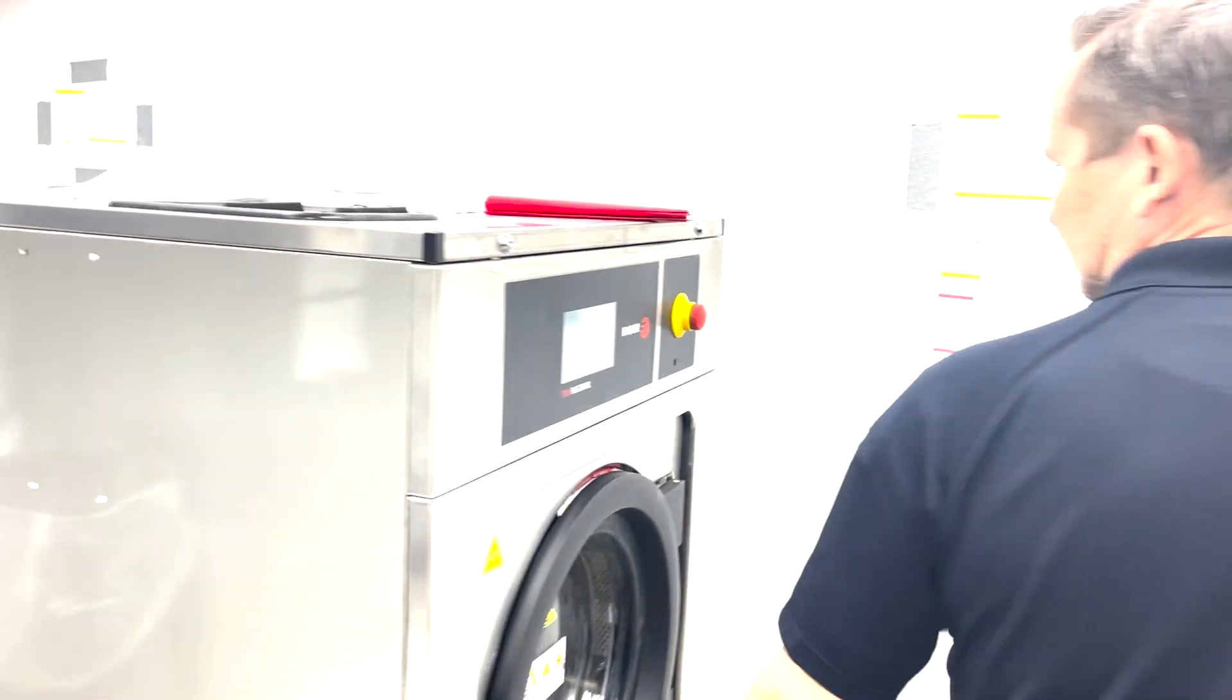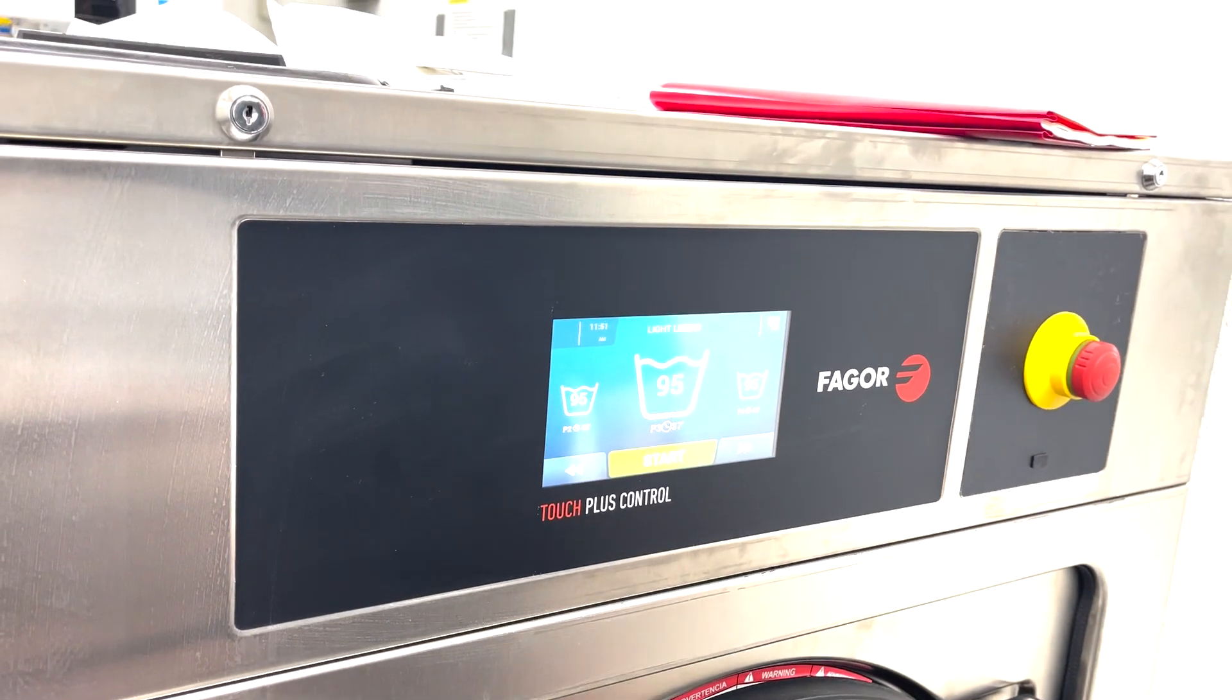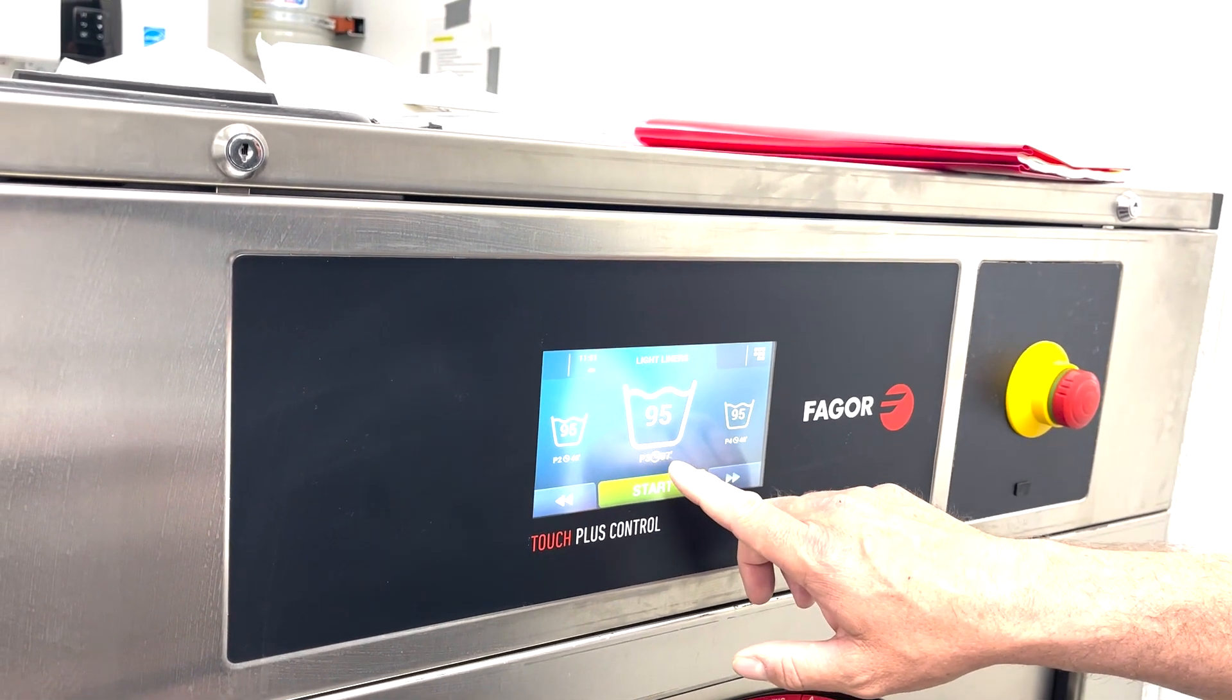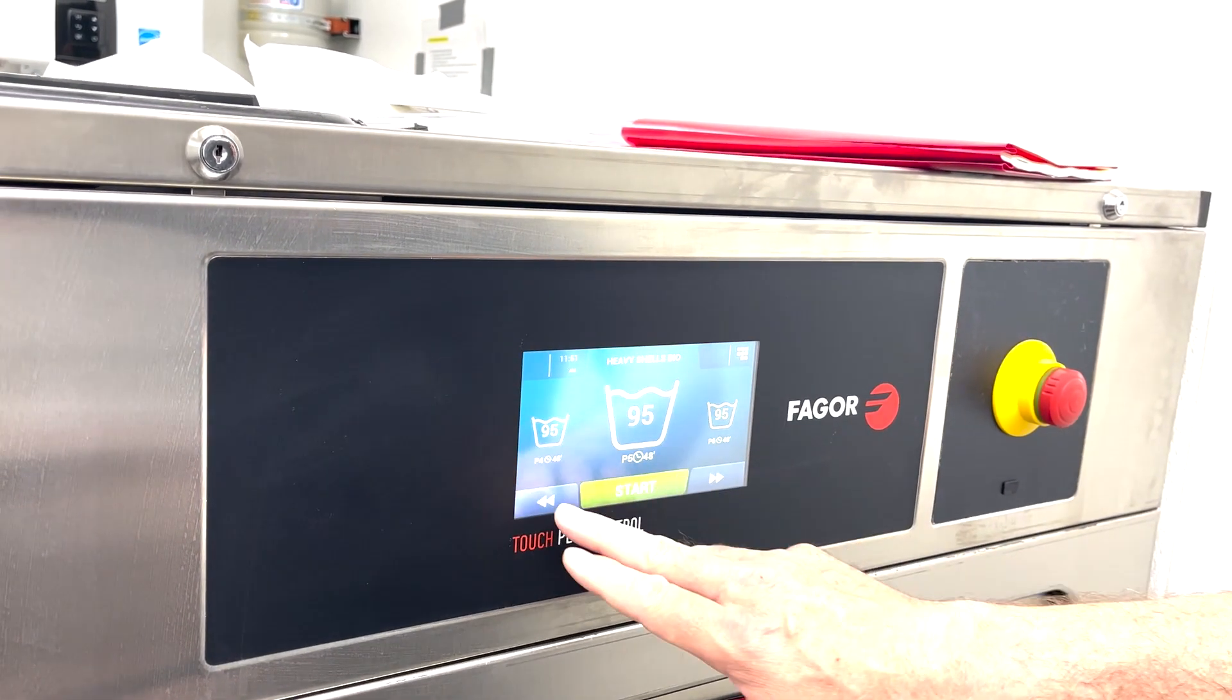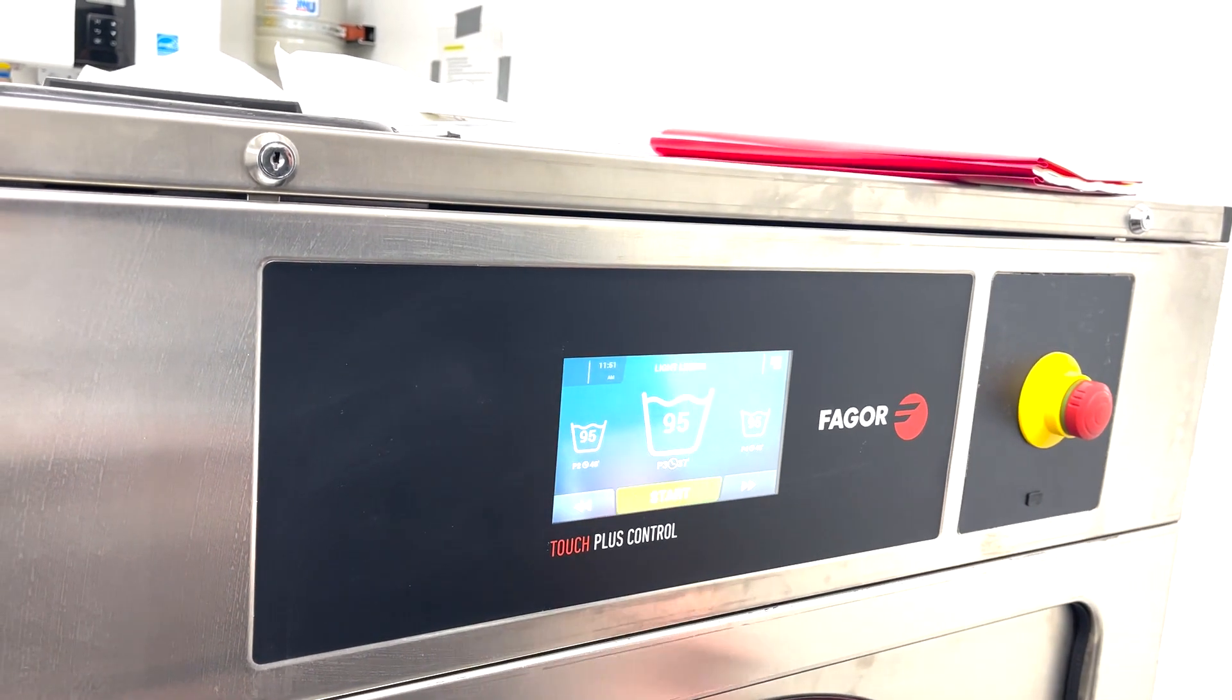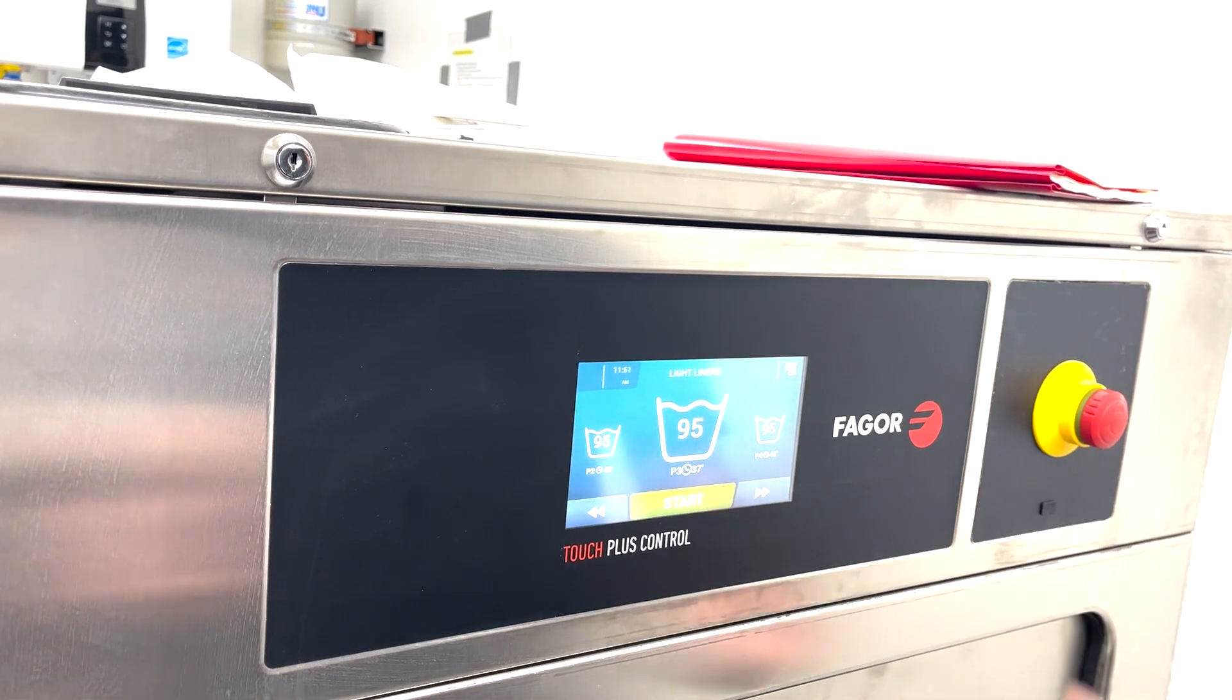So I've loaded the machine. I now go to the program that I want. I've got some liners—light liners—and then I'll just hit Start. It tells you right here how long the machine will run for. This is program three. It'll run for 37 minutes. If it was heavy shells or bio, it'd run for 48 minutes, just to give you an idea as to when you can come back and check on it to empty the machine.